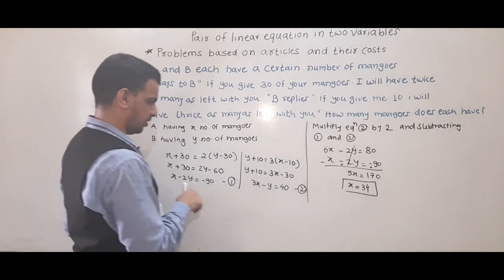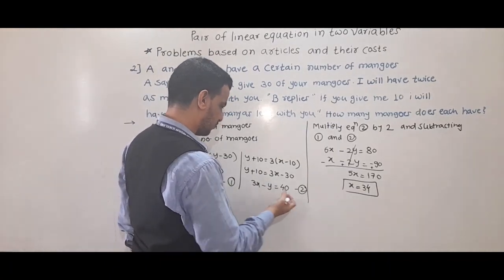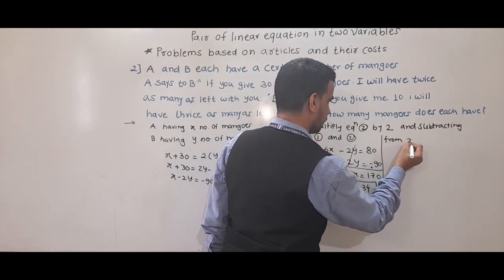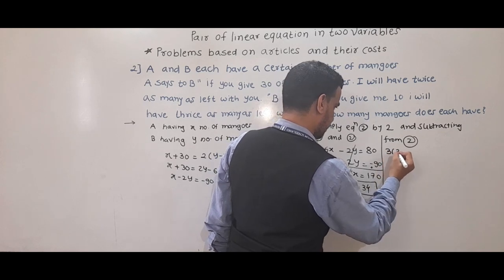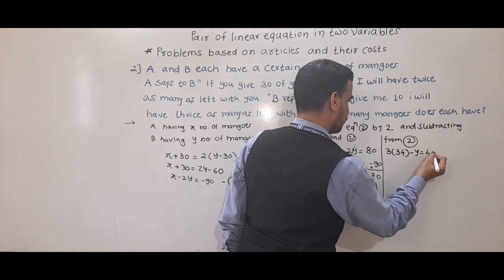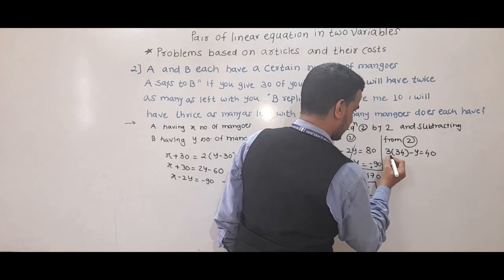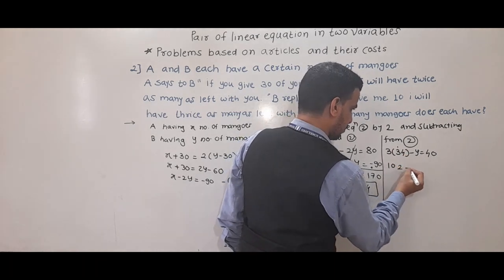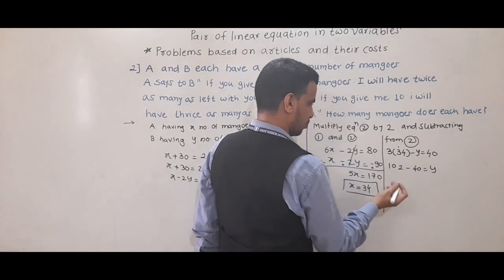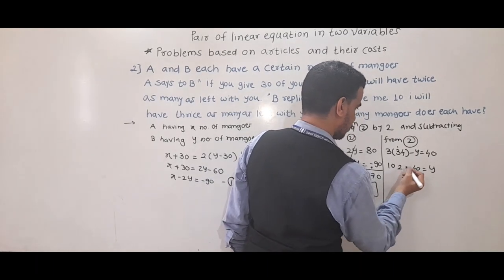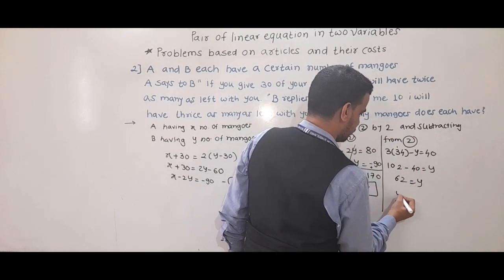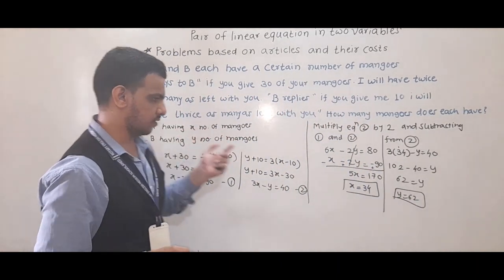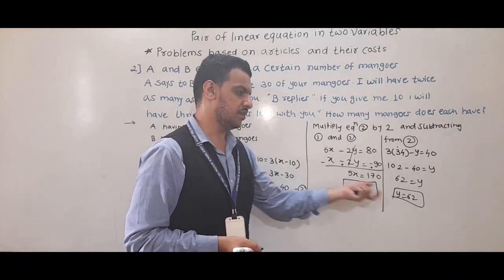Substituting x equals 34 into equation 2: 3 into 34 minus y equals 40. 3 into 34 is 102, so 102 minus 40 equals y, giving y equals 62. Therefore A has 34 mangoes and B has 62 mangoes.